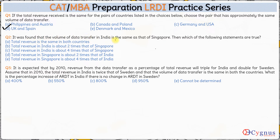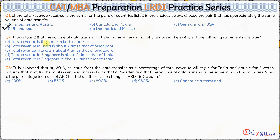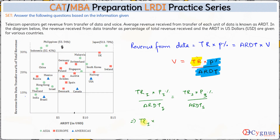Question 2: it was found that the volume of data transfer in India is the same as that of Singapore. That means: (Total Revenue India × P% India) / ARDT India = (Total Revenue Singapore × P% Singapore) / ARDT Singapore. India gets approximately 9% from data and its ARDT is approximately 1, which equals Total Revenue Singapore × P% Singapore divided by ARDT Singapore.